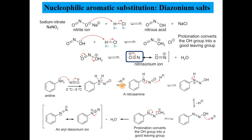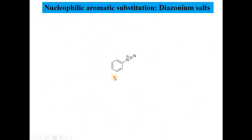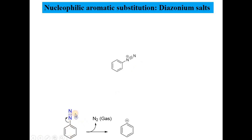The diazonium salt contains a benzene ring with a positively charged nitrogen group. This diazonium is a very reactive species — the nitrogen leaves even at very low temperatures of 0 to 5°C, producing an aryl cation. This aryl cation can be substituted with a variety of nucleophiles. The nitrogen leaves in gaseous form, and the aryl cation can then react with nucleophiles such as NU, OH, Cl⁻, F⁻, or any other nucleophile to give a variety of products.